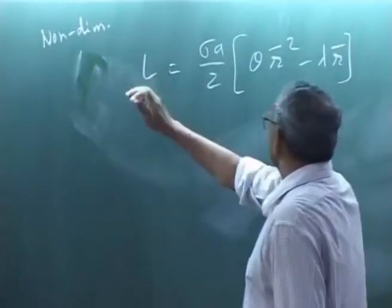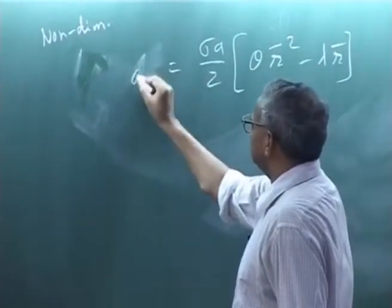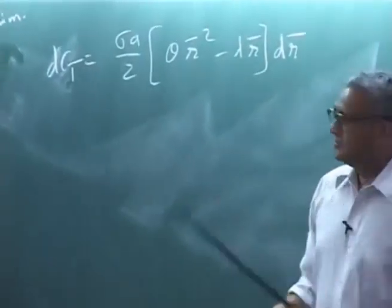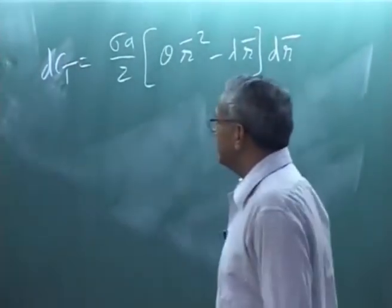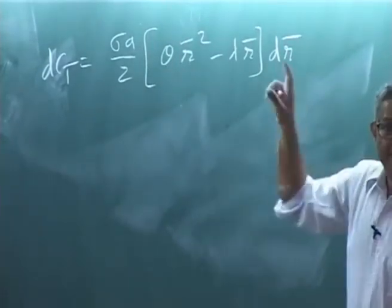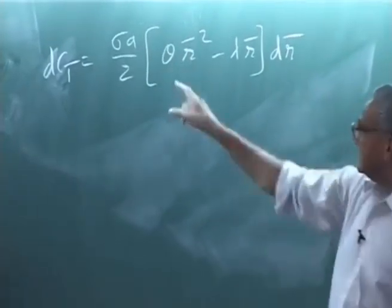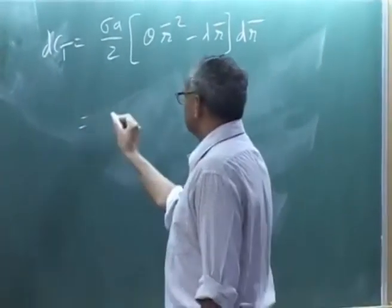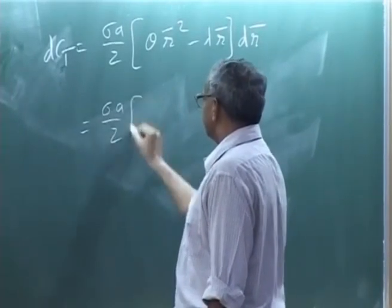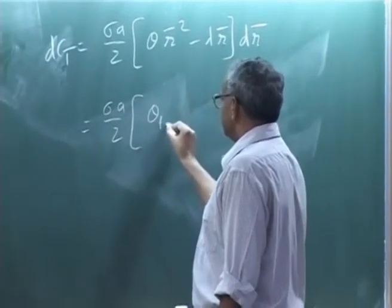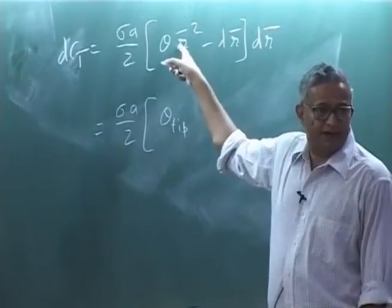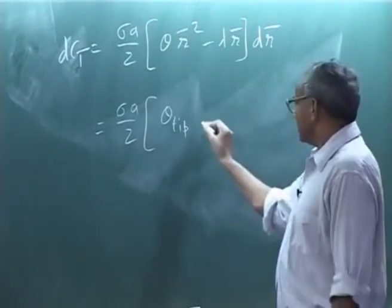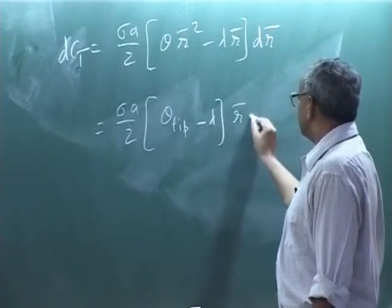It is, I think dCT becomes because this is not non-dimensional. This is now dCT. If I substitute theta as theta tip over r bar, then what will this become? This will become theta tip r bar, one of the r bar will cancel out, and here lambda r bar. So I will have lambda r bar.